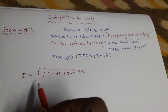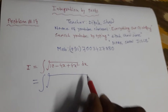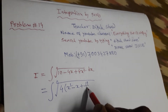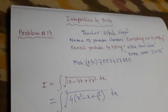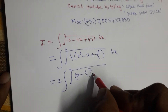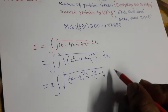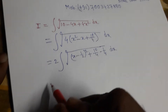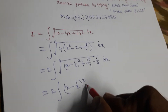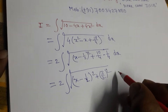Now I am starting to solve the given problem. We can write 10 - 4x + 4x² as 4 times (x² - x + 10/4), which equals 2 times [(x - 1/2)² + (10/4 - 1/4)]. This simplifies to (x - 1/2)² + 9/4, where 9/4 is (3/2)². So the expression is in the form √(x² + a²).